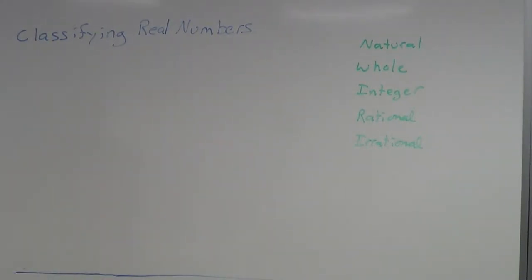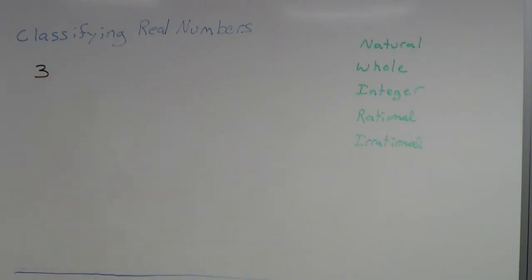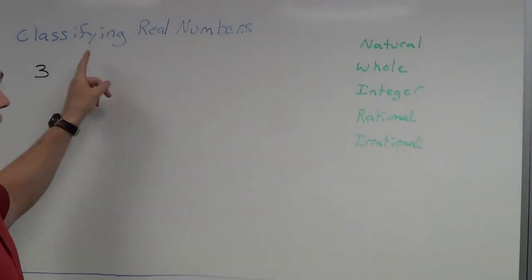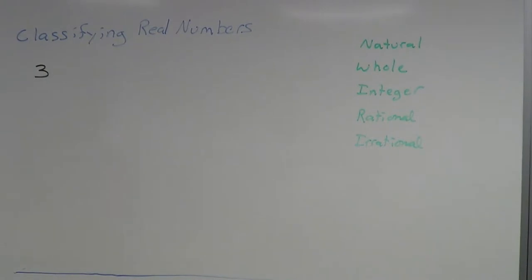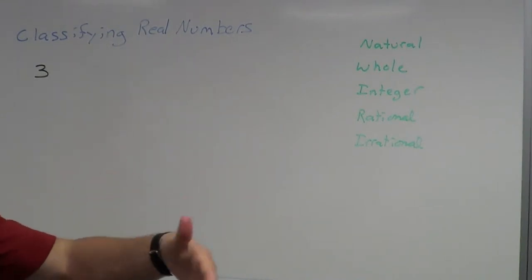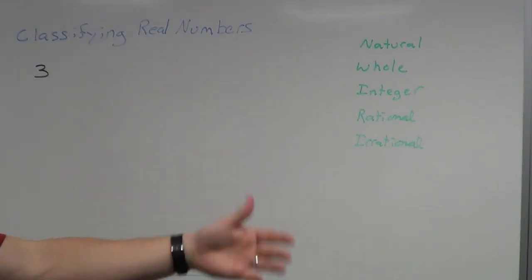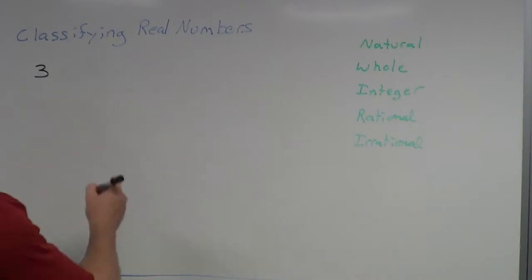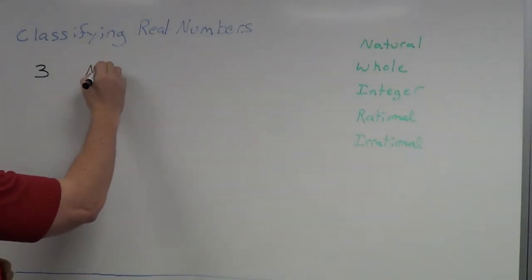We'll start with something simple — the number three. We're going to figure out which category this belongs to. Natural numbers were also known as the counting numbers, the numbers you used to count with: ones and twos and threes and fours and fives. So we can assume three would be a natural number.